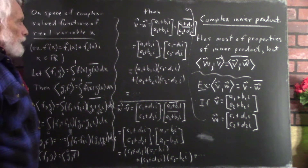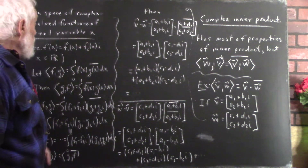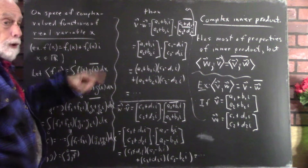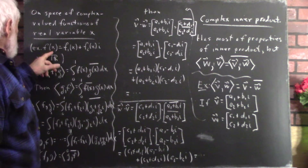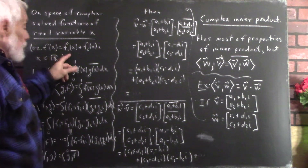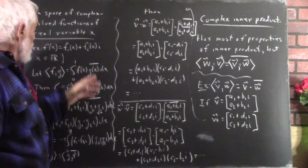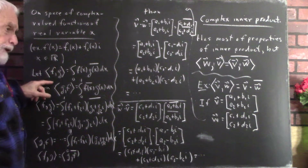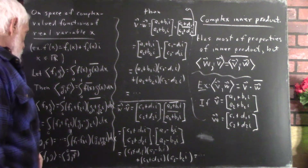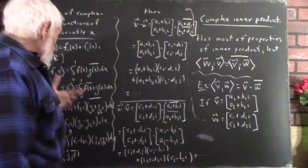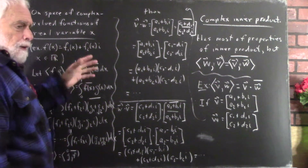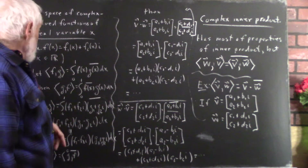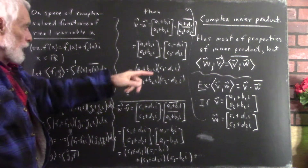Another example of a complex inner product: on a space of complex-valued functions of a real variable x, f(x) has a real part f1(x) and an imaginary part f2(x), both real-valued. There are technical restrictions — f and g must be integrable, and their product must be integrable on [0,1]. We define the inner product analogously to what we did before, using the integral from 0 to 1.